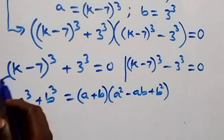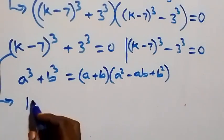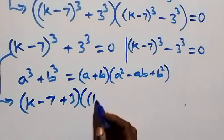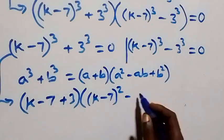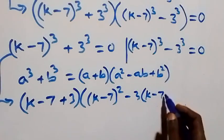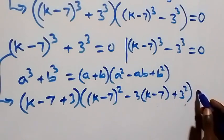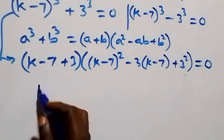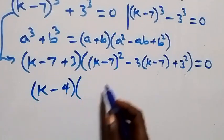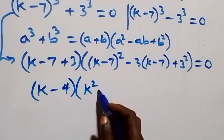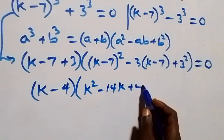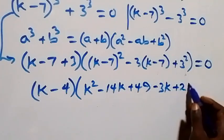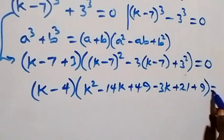Applying the formula, we get k minus 7 plus 3, times the bracket k minus 7 squared, minus k minus 7 times 3, plus 3 squared, equals zero. Simplifying, this becomes k minus 4, times the bracket k squared minus 14k plus 49, minus 3 times negative 3k plus 21, plus 9, equals zero.